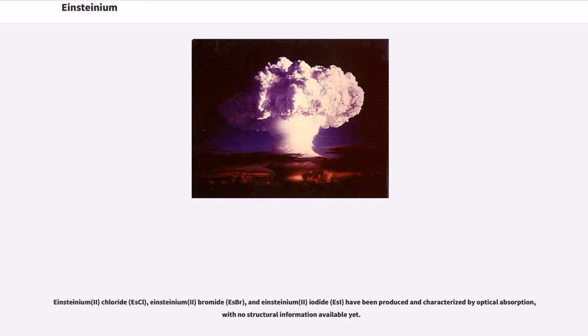The divalent compounds of Einsteinium are obtained by reducing the trivalent halides with hydrogen. Einsteinium-2 chloride, EsCl2, Einsteinium-2 bromide, EsBr2, and Einsteinium-2 iodide, EsI2, have been produced and characterized by optical absorption, with no structural information available yet.